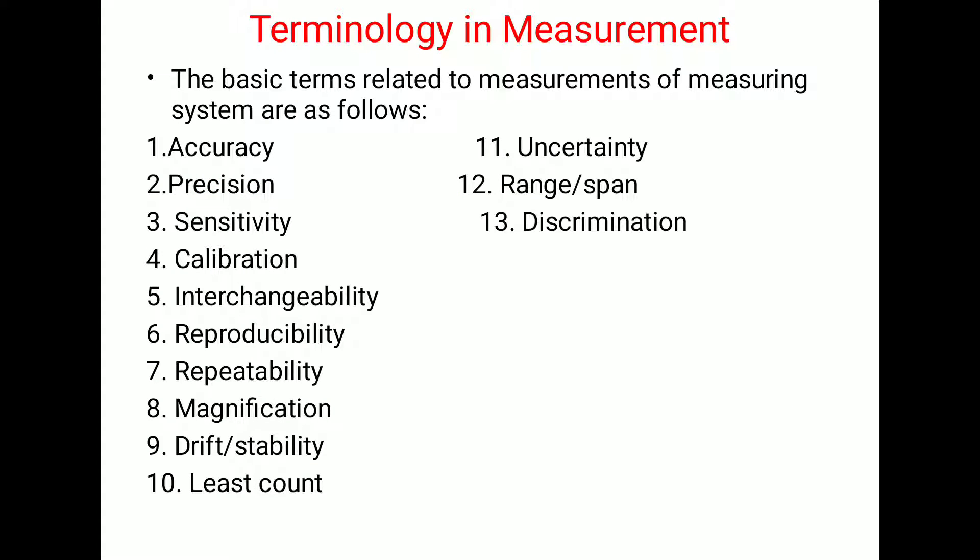Basic terms related to measurements of a measuring system are as follows: accuracy, precision, sensitivity, calibration, interchangeability, reproducibility, repeatability, magnification, drift or stability, least count, uncertainty, range or span, and discrimination. These are the various terminologies which are used in measurement.